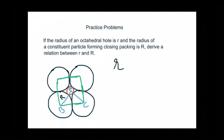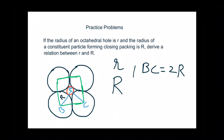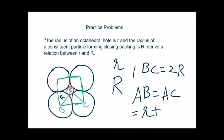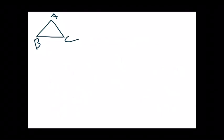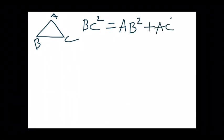We have drawn a square connecting the centers of all these constituent particles forming the close packing. The radius of the octahedral hole (small r) and the radius of the constituent particle (capital R) are marked. Inside this square there is a right-angled triangle ABC. Side BC equals 2R, and sides AB and AC each equal R + r. We apply Pythagoras' theorem.